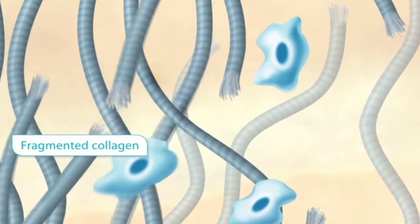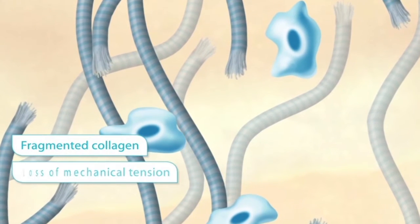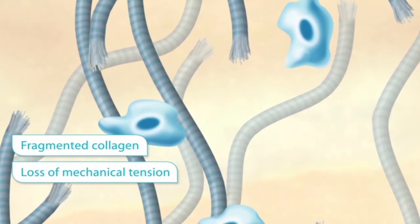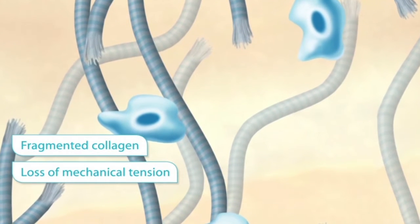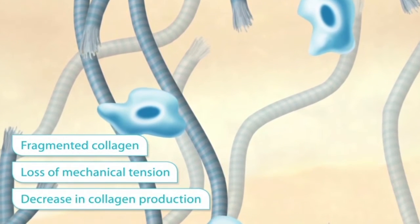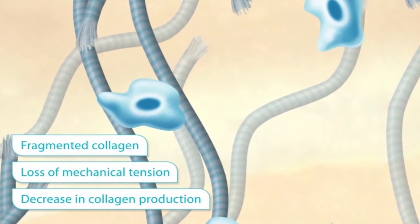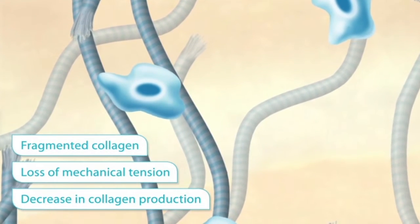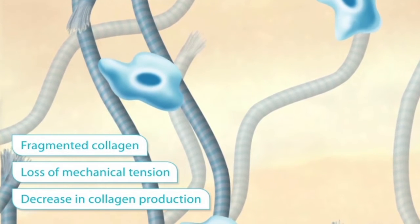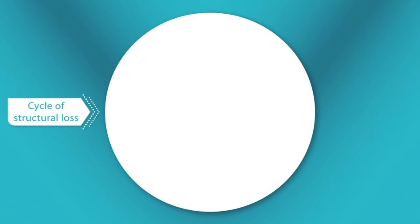During the aging process, the collagen fibers deteriorate and fragmented collagen accumulates. As a result, the mechanical tension decreases and fibroblast activity is impaired, leading to decreased collagen production and an increase in collagen degrading enzymes. This reduces skin integrity and promotes a cycle of structural loss.